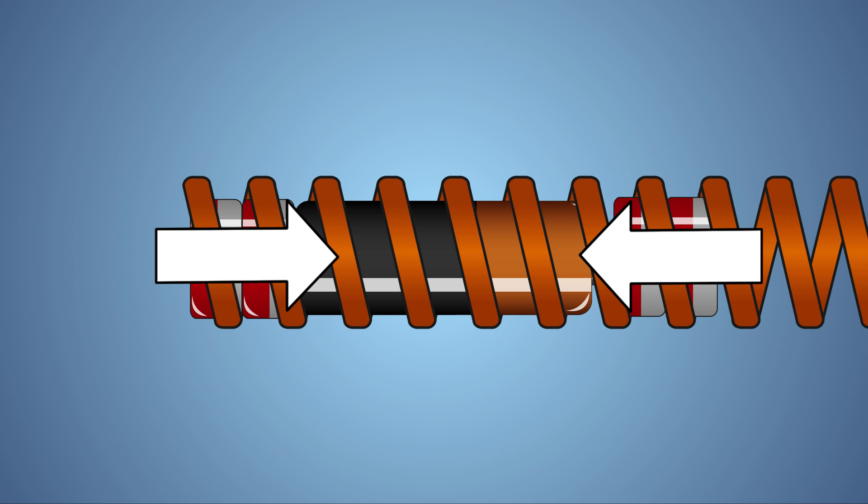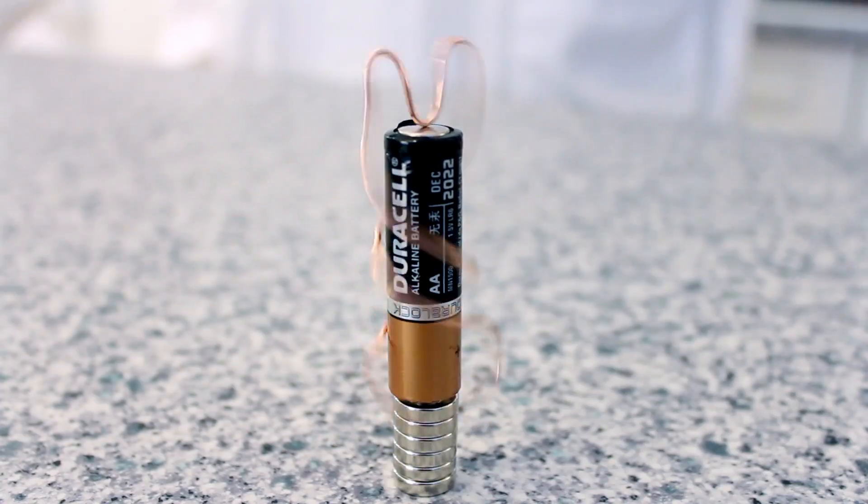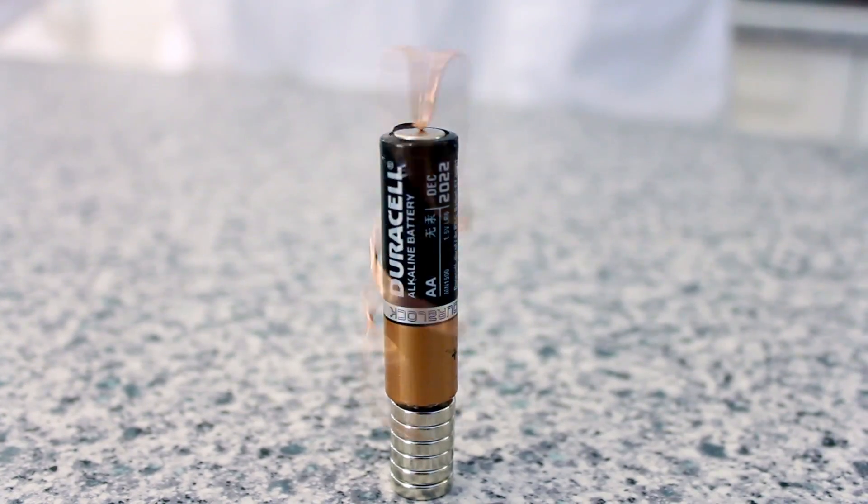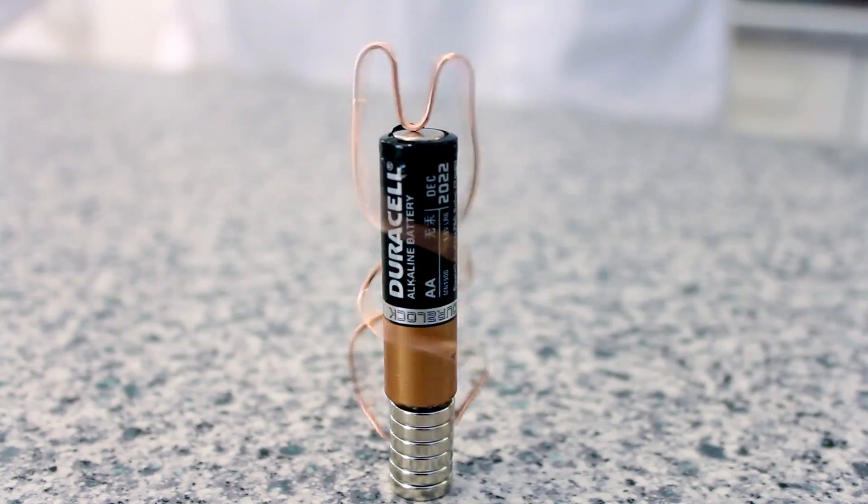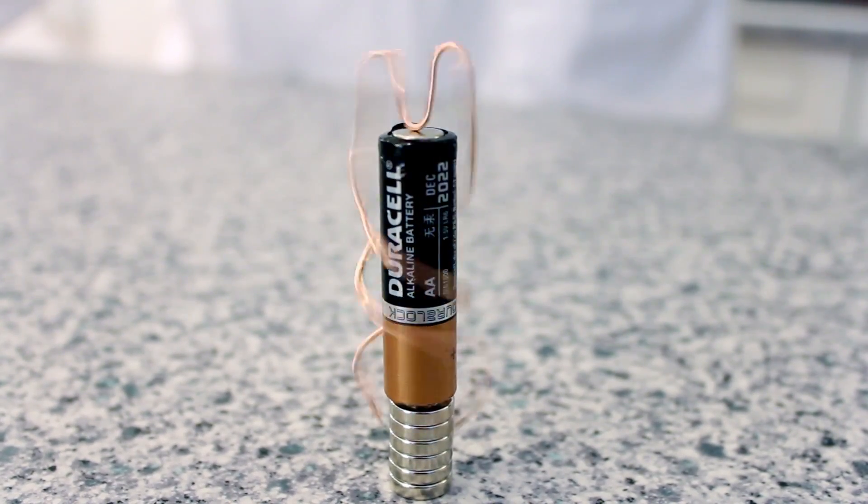There is one significant difference between the train in this experiment and the motor we made in a previous episode. The train uses the magnetic field of a current to push magnets, and the motor uses the magnetic field of a magnet to push electrons, or electrical current, moving a wire.